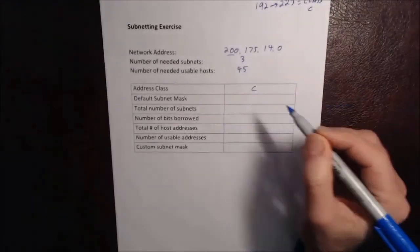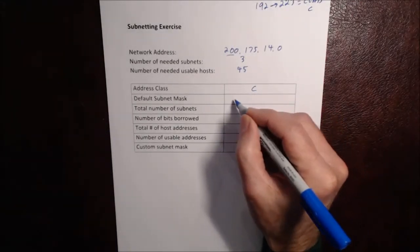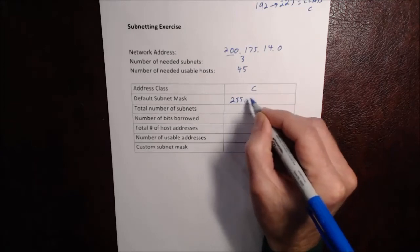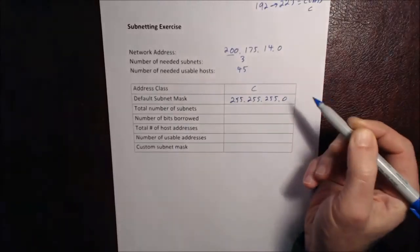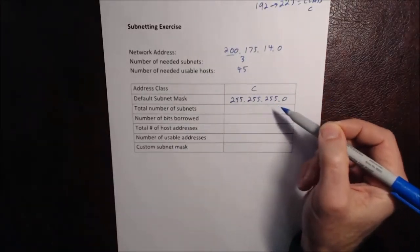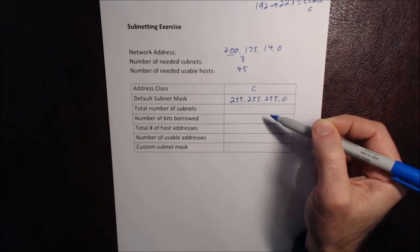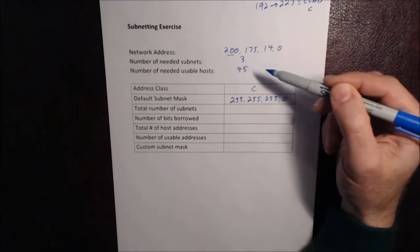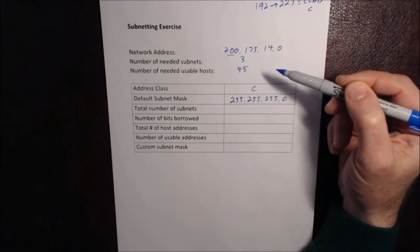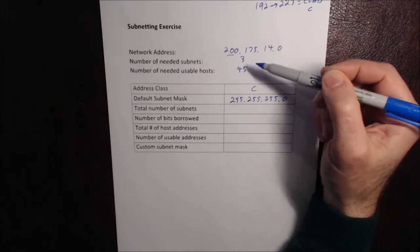So we know that it's Class C. The default subnet mask, and the whole reason we determine the class is just to find what the default subnet mask is. In this case, it's 255.255.255.0. The next step is to calculate the number of subnets that we're going to end up with. We want three subnets, but with the way the binary math works out, we are sometimes not always going to be able to be exactly at that number.